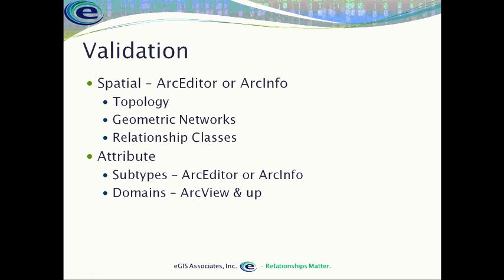A geometric network works on linear networks that have single flow directions — sewers, water lines, natural gas systems. We can create this network, make sure everything's flowing in the right direction, then find out what happens to the system if a valve is shut off, allowing network traces and similar analysis. Relationship classes tie two or more feature classes or tables together so that if a change is made in one, it can affect or make a change in the other.